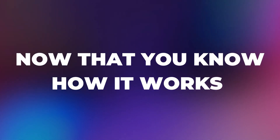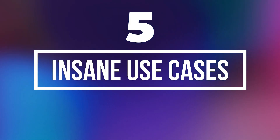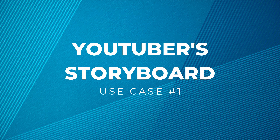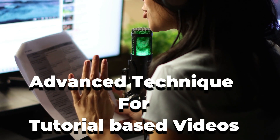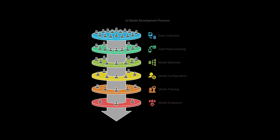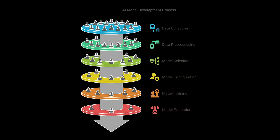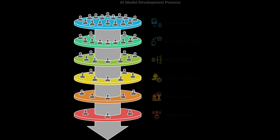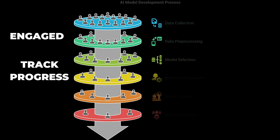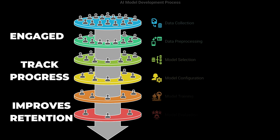Now that you know how it works, what can you actually do with it? Let me show you five quick high-impact examples. First, the YouTuber Storyboard. This is an advanced technique for any tutorial-based video. I can use a visual like this in a video and blur the other steps, then unblur them one by one as I explain each step. This keeps viewers engaged, helps them track their progress throughout the content, and improves information retention.